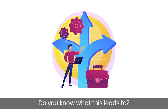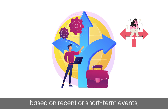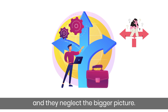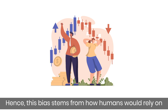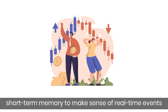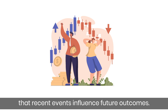What does this lead to? It leads to people frequently making emotional decisions based on recent or short-term events, and they neglect the bigger picture. This bias stems from how humans rely on short-term memory to make sense of real-time events and how easy it is for people to believe that recent events influence future outcomes.